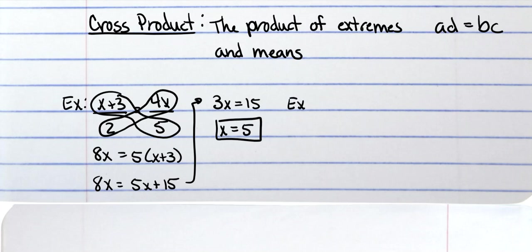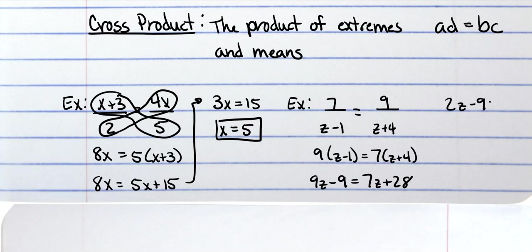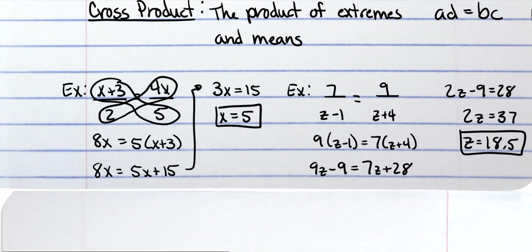And we have another example. So again, cross multiply—we have 9 times z minus 1 is equal to 7 times z plus 4. Distribute and you get 9z minus 9 is equal to 7z plus 28. Then I need to subtract 7z from both sides, so that's 2z minus 9 is equal to 28. Then I need to add 9 to both sides, so 2z is equal to 37. Then I need to divide both sides by 2, so z is 18.5.